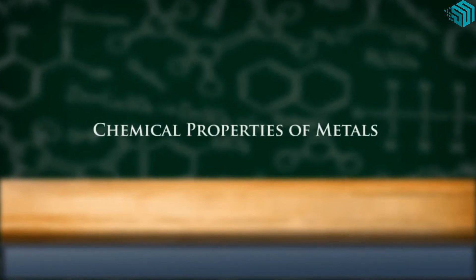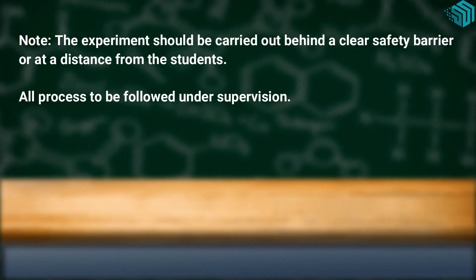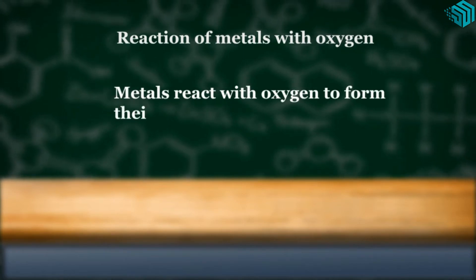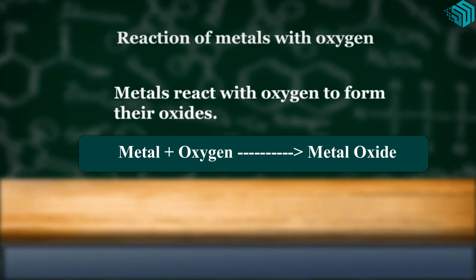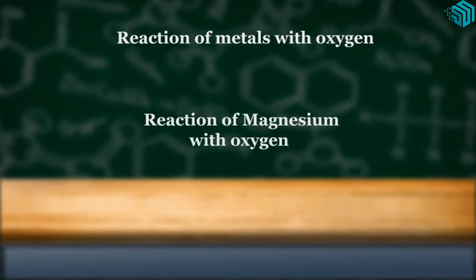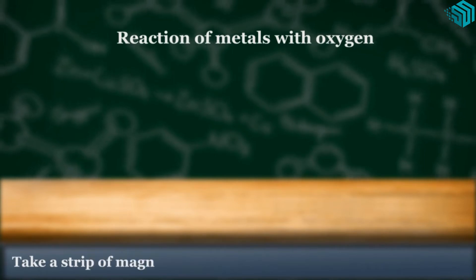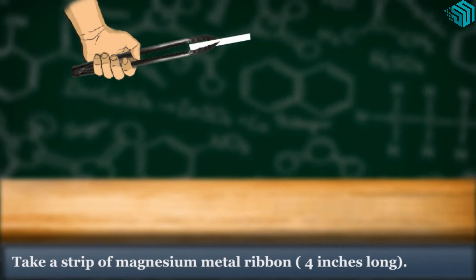Chemical properties of metals. Reaction of metals with oxygen. Metals react with oxygen to form their oxides. Metal plus oxygen gives metal oxide. For example, reaction of magnesium, which is a metal, with oxygen. Take a strip of magnesium metal ribbon, which would be 4 inches long, and a lighted burner.